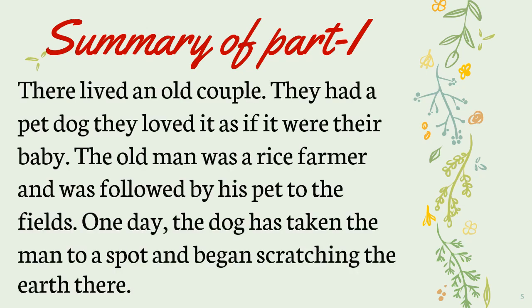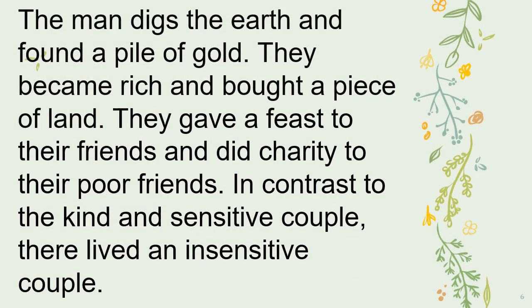In my last video, I told you that this chapter is divided into two parts and in our last video we read part 1. Let's have a look at the summary of part 1. There lived an old couple who had a pet dog they loved as if it were their baby. The old man was a rice farmer followed by his pet to the fields. One day, the dog took the man to a spot and began scratching the earth there. The man dug the earth and found a pile of gold. They became rich, bought a piece of land, gave a feast to their friends, and did charity for their poor friends.